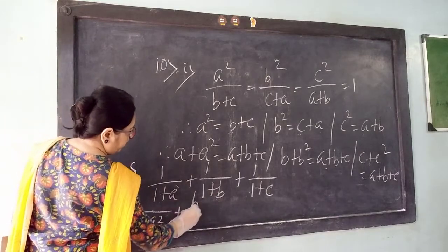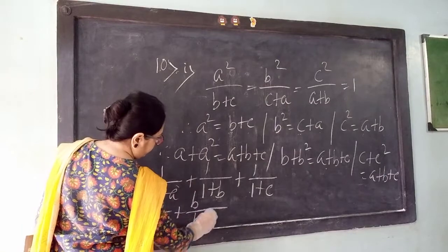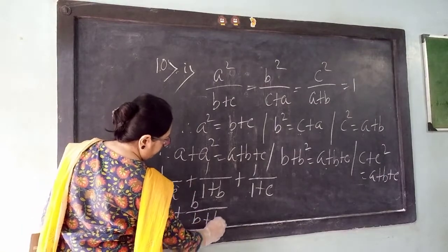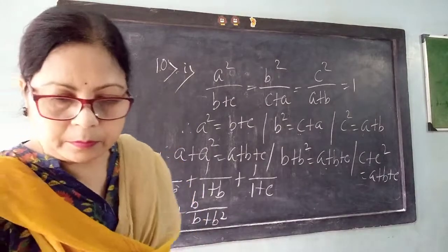Similarly, we are multiplying by B, so denominator is coming B plus B squared.